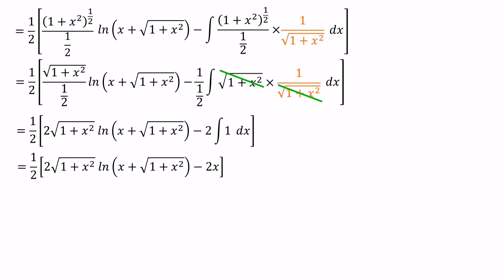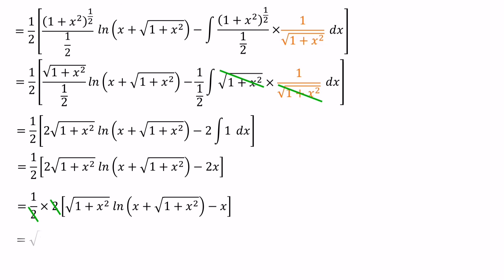Then we take 2 as a common factor and cancel it with the denominator value 2. The final answer is: square root (1 plus x squared) times ln(x plus square root (1 plus x squared)) minus x, plus C.